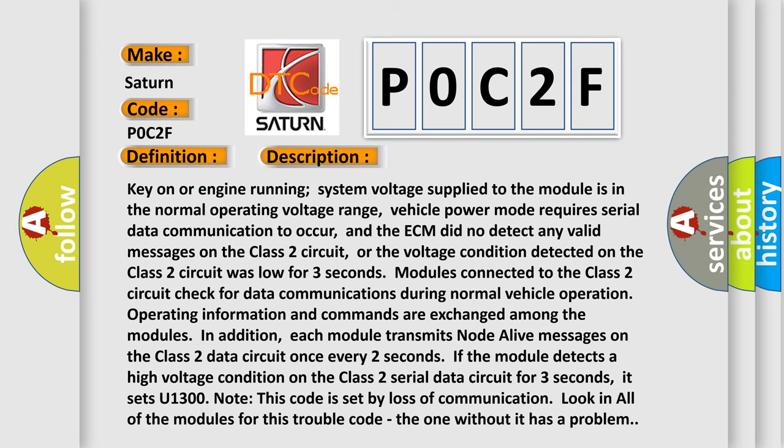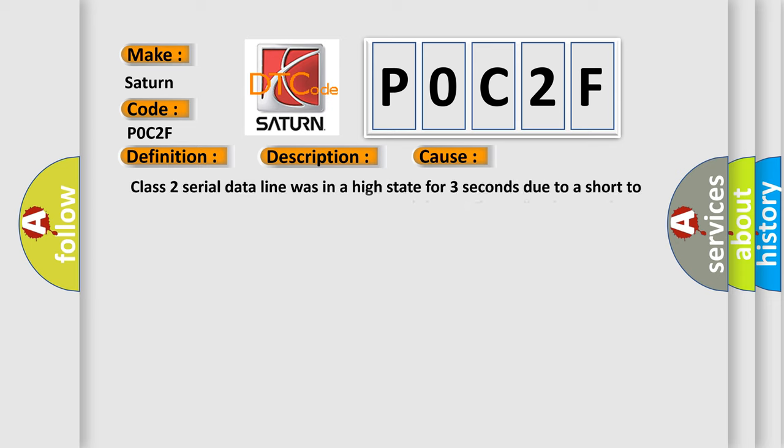This diagnostic error occurs most often in these cases: Class 2 serial data line was in a high state for three seconds due to a short to VREF or system power. One or more modules on Class 2 line has a short to power.